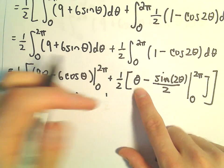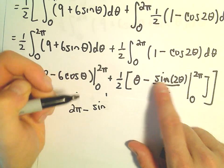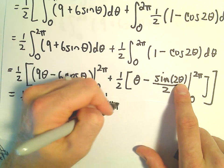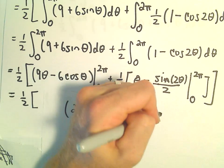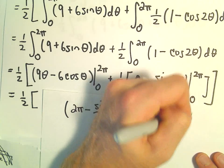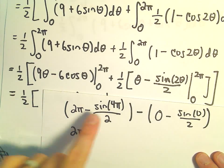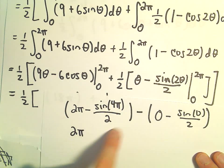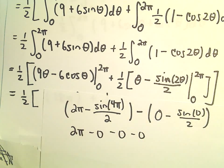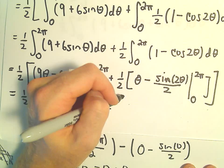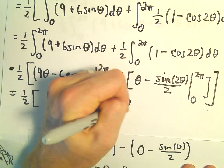If we compute theta minus sine of 2 theta over 2 from 0 to 2 pi. When we evaluate that, we'll put the 1 half back in in a second. So we would have 2 pi minus sine of 2 times 2 pi, which would be 4 pi, over 2. So that would be our upper limit. Minus our lower limit, we would get 0 minus sine of 0 over 2. This is 2 pi. Sine of 4 pi is going to just be 0. This is 0. Sine of 0 is 0. So it looks like this whole second part, when we evaluate it, we're going to be left with just 2 pi.